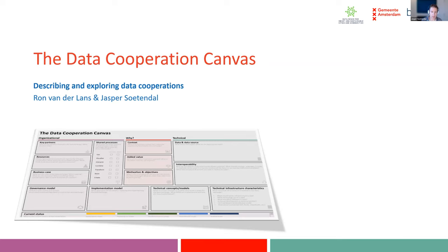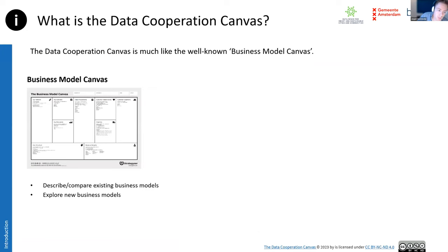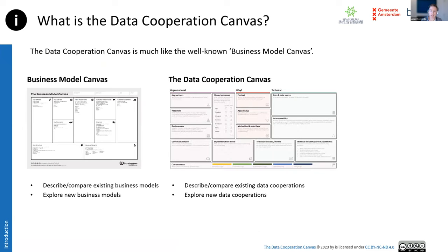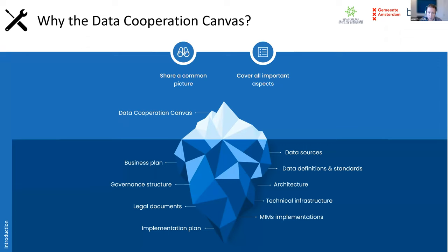What is the data cooperation canvas? You're probably all familiar with the business model canvas, which can be used to describe or compare existing business models or to explore new ones. Likewise, the data cooperation canvas can be used to describe and compare existing data cooperations and to explore new ones. We want to use it to have an executive summary of an existing or new data cooperation — it's the tip of the iceberg. Because if you're setting up a data cooperation, there's a lot of things you will set up: a business plan, a governance structure, and all the things we're discussing today and even more.